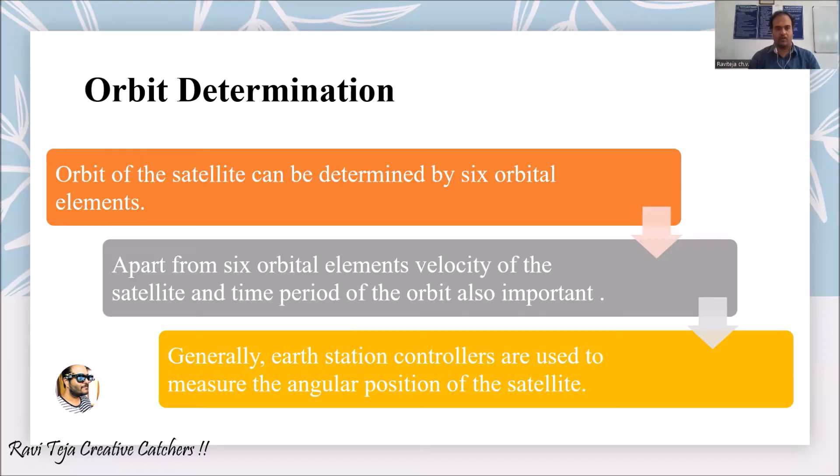The orbit of the satellite can be determined by six orbital elements. Apart from these six orbital elements, the velocity of the satellite and time period of orbit is also important. With what speed or velocity the satellite is moving in the orbit and how much time it takes to complete several revolutions is also important.